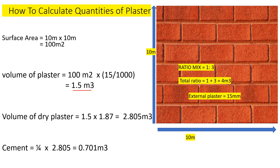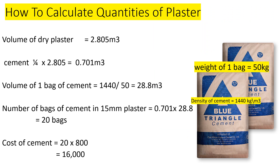To find the volume of dry plaster, we multiply the wet volume by a factor of 1.87. So 1.5 multiplied by 1.87 gives us 2.805 cubic meters of dry plaster.